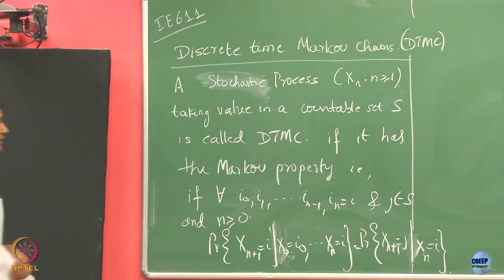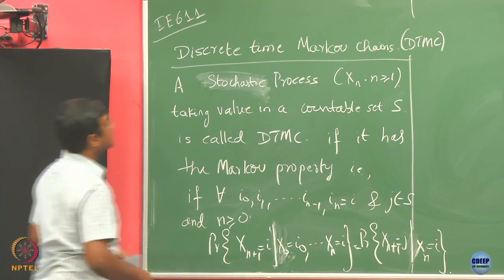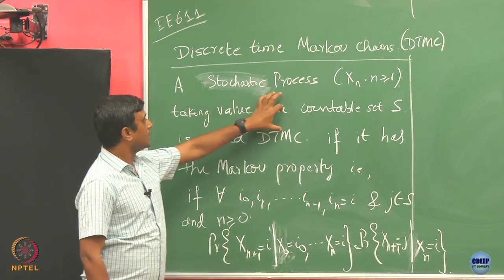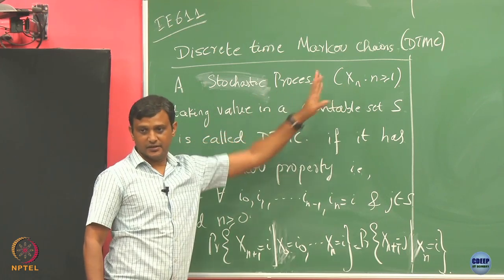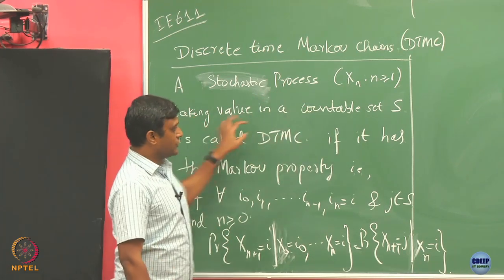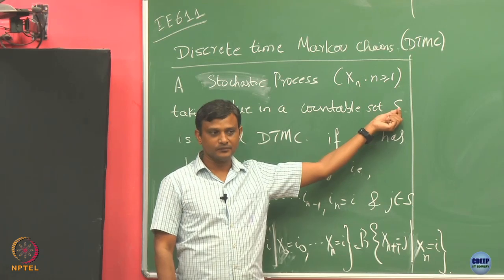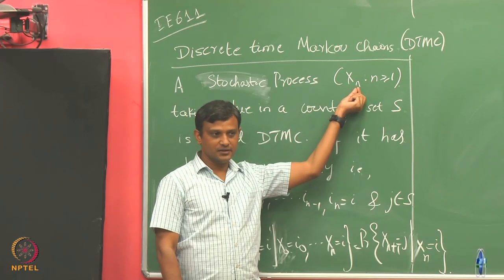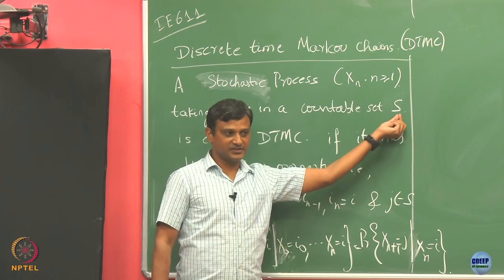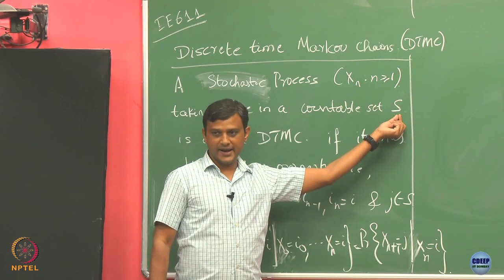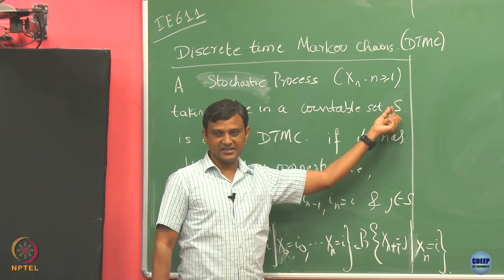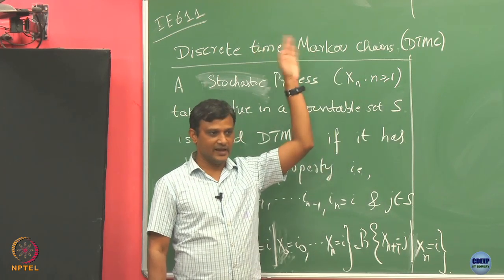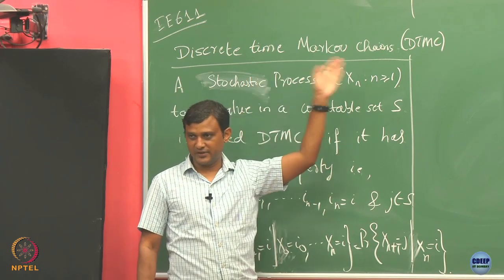This is the definition of a discrete time Markov chain. We take a process Xn which takes values in a countable set S, where the outcomes lie in a countable set. The elements in this countable set we index as 1, 2, 3, and so on, since it is countable.